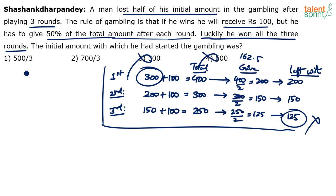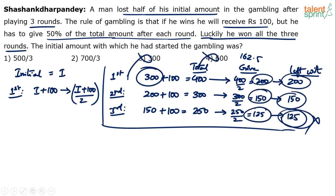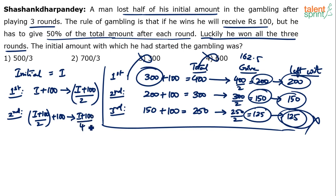Let us assume the initial amount is i. After round 1: he wins 100, making it i plus 100; he gives half, so he is left with (i + 100)/2. After round 2: he adds 100 to that, giving (i + 100)/2 + 100. He is left with half of this, which is (i + 100)/4 + 50.